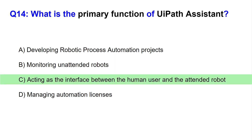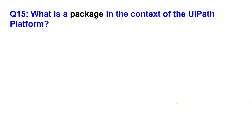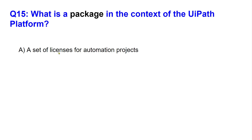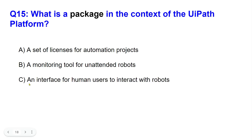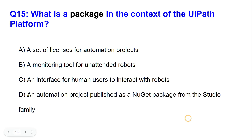The answer is C. Next question: What is a Package in the context of the UiPath platform? Options: A) A set of licenses for automation projects, B) A monitoring tool for unattended robots, C) An interface for human users to interact with robots, D) An automation project published as a NuGet package from the Studio family. Take your time and comment your answer.